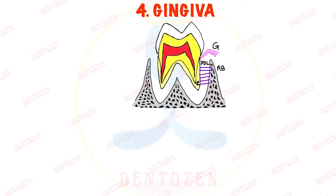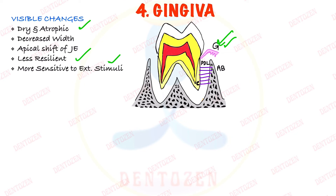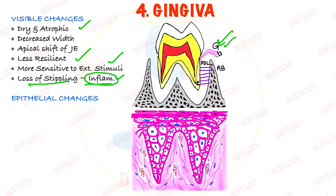Now let's talk about gingiva, which is a soft tissue. There are visible changes we can see from outside: it becomes dry and atrophic, its size and width decrease, and there is an apical shift of the junctional epithelium. It becomes less resilient and more sensitive to external stimuli. Also, the stippling — the depressions and elevations on the surface of the attached gingiva — is lost with age, possibly due to aging or the inflammatory process.